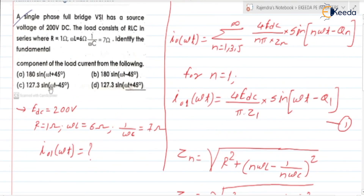So I₀₁(ωt) = 180 · sin(ωt + 45°). Checking the options, the correct answer is Option A. The peak value is 180 A, with a phase angle of +45 degrees.